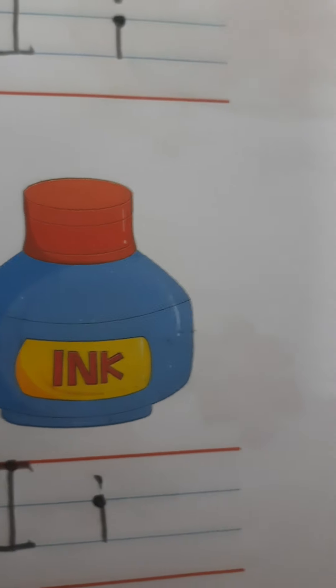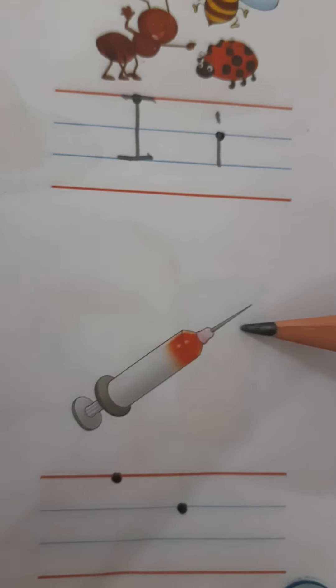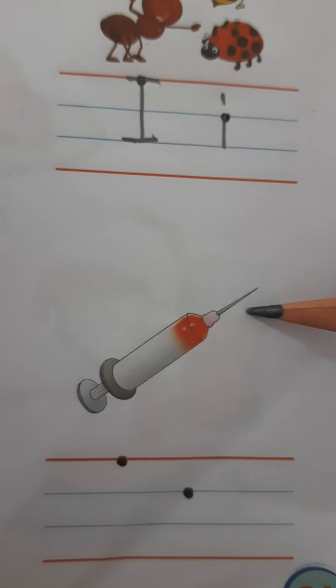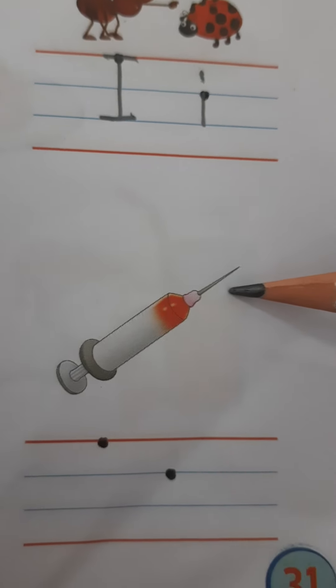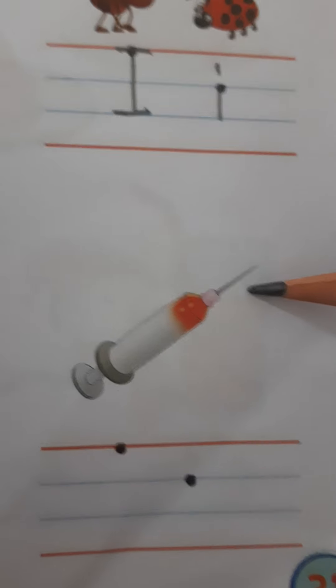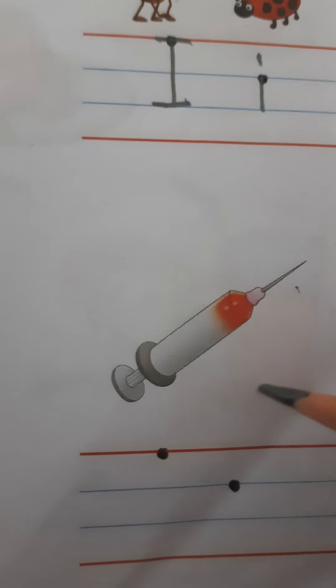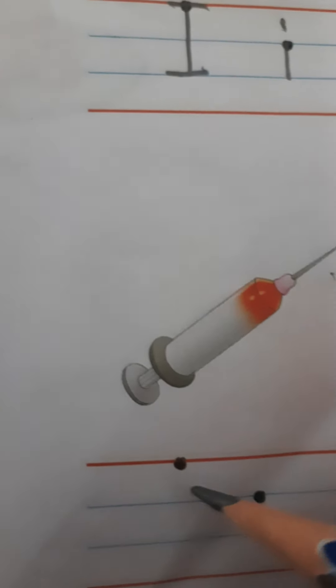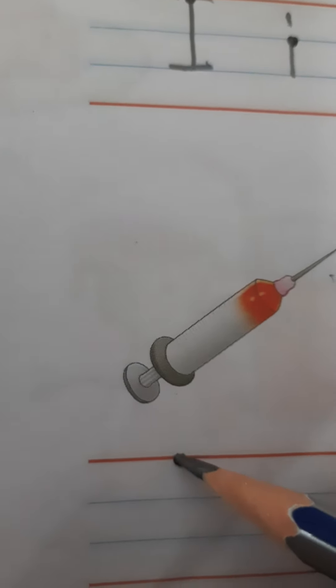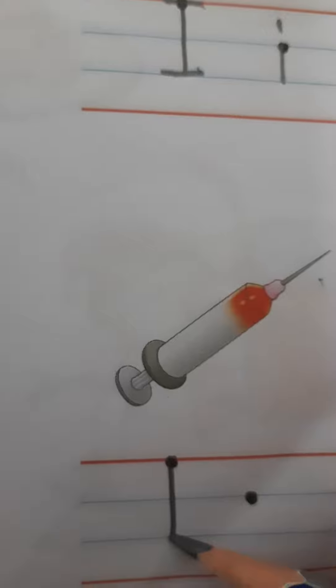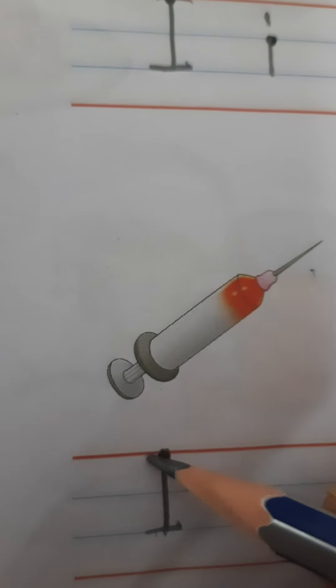Now next picture — what is this children? This is an injection. So write capital I and small i.